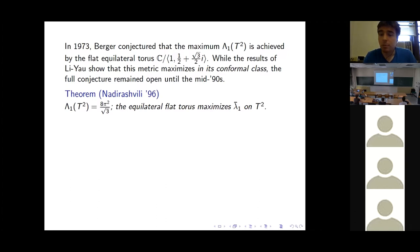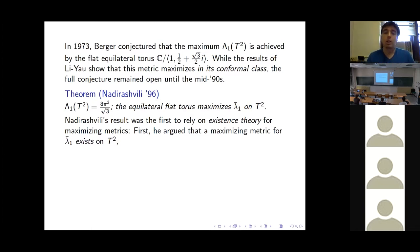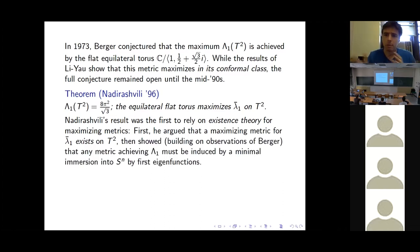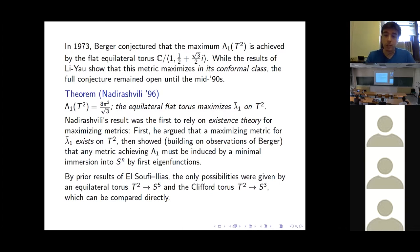The proof is distinct from those for S² and RP² because it relies on an existence theory for maximizing metrics. First, Nadirashvili gave an analytic argument that a maximizing metric does exist. Then he showed — as Berger had partially observed — that any maximizing metric is induced by a minimal immersion into Sⁿ by first eigenfunctions. This reduces the problem to classifying minimal immersions of tori into spheres by first eigenfunctions, which El-Soufi and Ilias had solved: the only possibilities are the equilateral torus into S⁵ and the Clifford torus into S³.